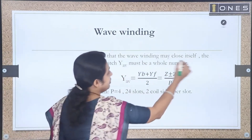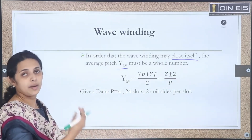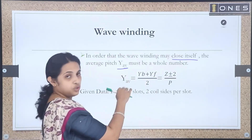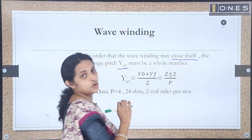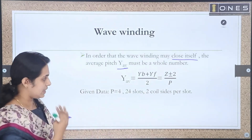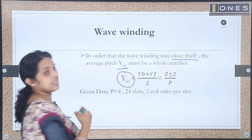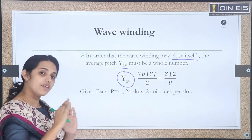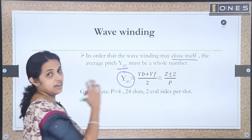In order that the wave winding may close itself, the average pitch must be a whole number. Y_average equals (YB + YF)/2, which equals (Z ± 2) divided by P. This value must be a whole number; a fractional value means wave winding is not possible with that particular number of conductors.